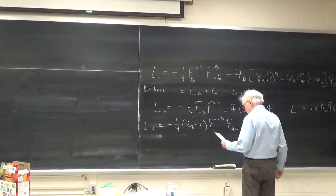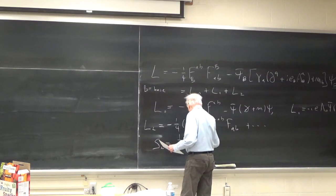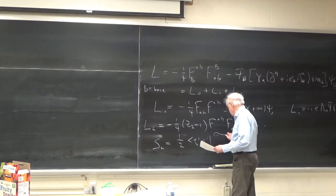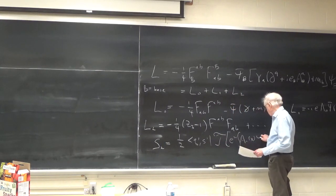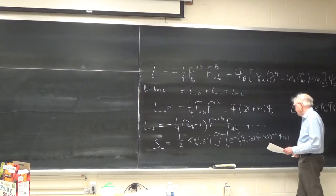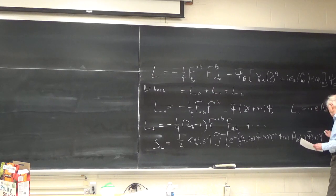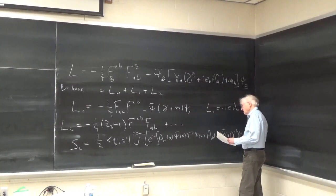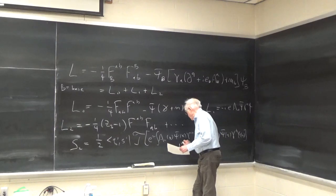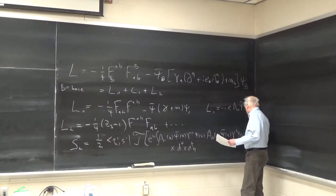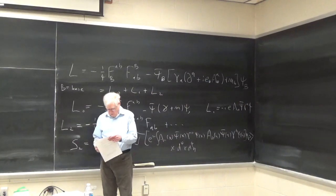Last time I showed you that the second-order contribution to the photon propagator amplitude is: e² times the time-ordered product integral of A_A(x) psi-bar(x) gamma^A psi(x), times A_B(y) psi-bar(y) gamma^B psi(y), times d⁴x d⁴y. That's the amplitude we worked out last time.